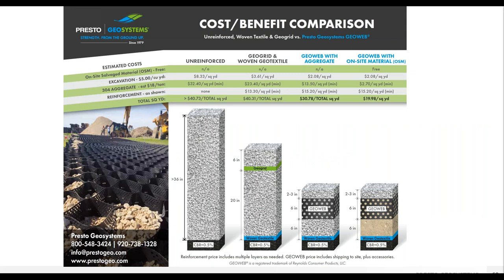One of the biggest questions is about cost, especially if this is new technology for you. Here we have a basic comparison for GEA for a load support application — a gravel road. The comparison shows the difference in price, cross-section, and depth between: aggregate only unreinforced section; a section using geogrids and geotextiles; and two sections showing use of the GEA system, one with aggregate and one with salvaged on-site materials. The GEA system is both thinner and less expensive. A 40% savings can be realized compared to geogrids and geotextiles when using salvaged low-quality on-site material.